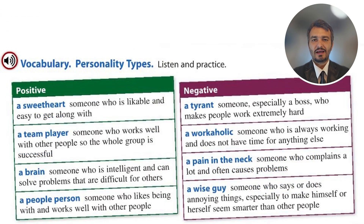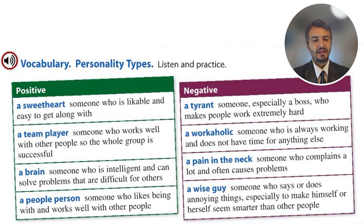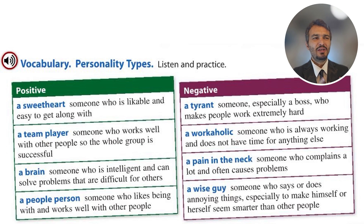Now let's talk about personality types or traits, positive and negative. A 'sweetheart' is a kind person everyone loves — he or she can get along with others easily and is not a troublemaker. A 'team player' or 'people person' — these look similar but there's a slight difference. A team player sacrifices and dedicates themselves for the sake of the company, wanting it to go forward and be successful.